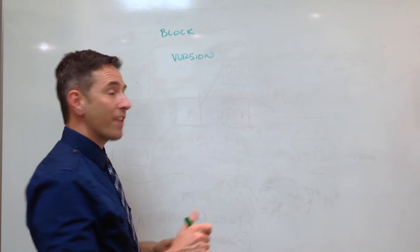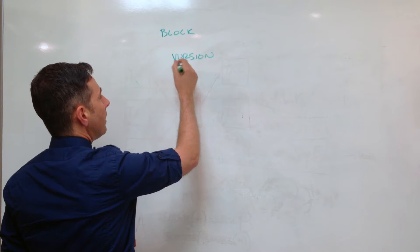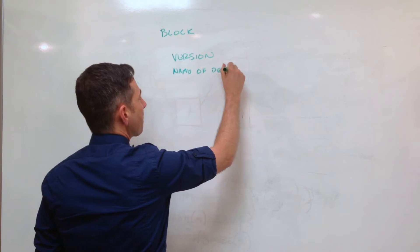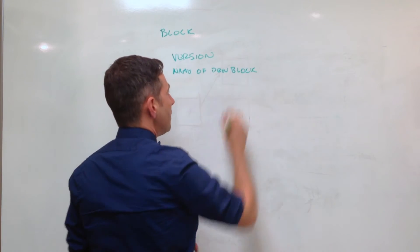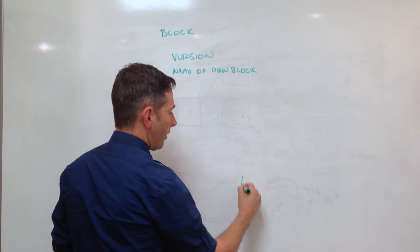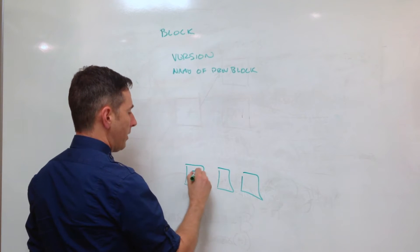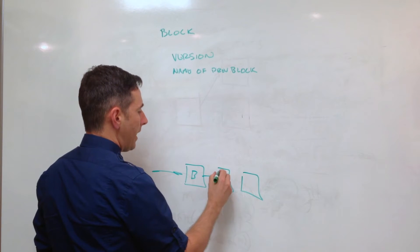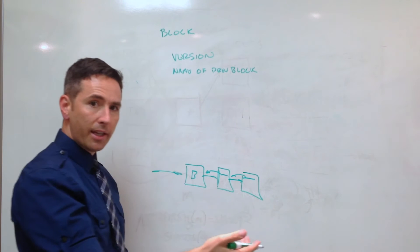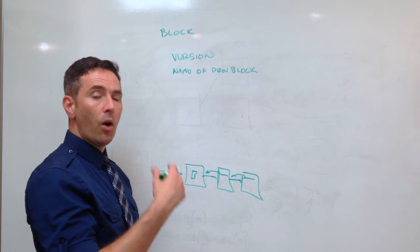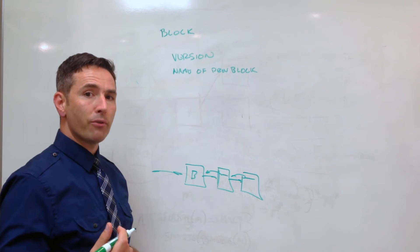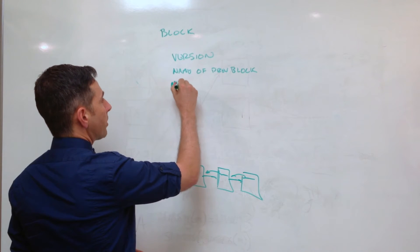The next thing you've got is the hash of the previous block - the name of the previous block, because each block includes this name of the previous block. That's why this is generally called a blockchain: each block in the blockchain has got a line in it which is the name of the previous block before it, and that's how it's linked together over time.